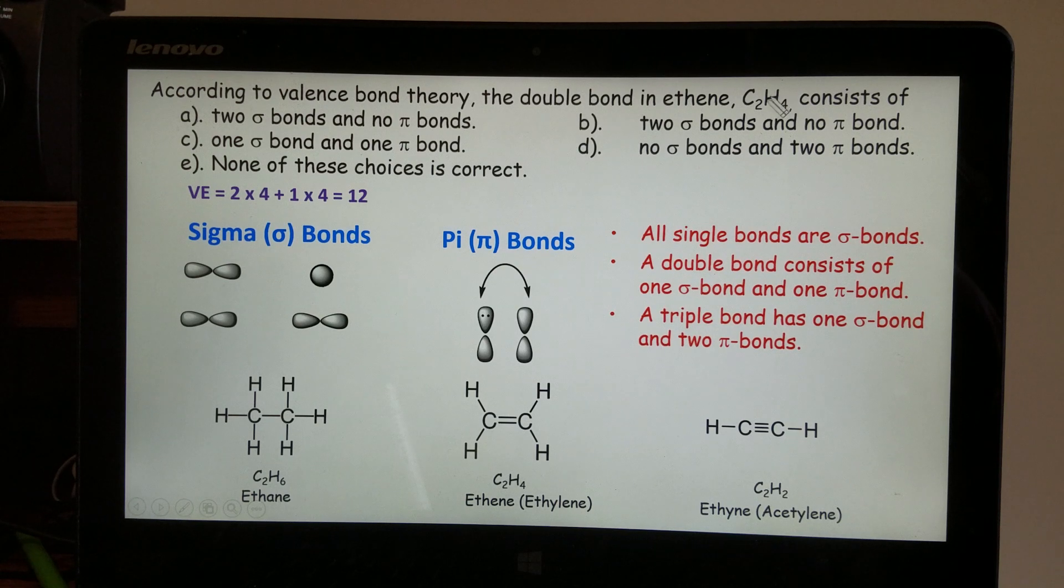It is not asked for the total number of bonds for this molecule, just for the double bond. Double bond, one sigma, one pi. Therefore, C is the correct answer.